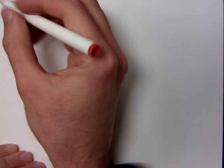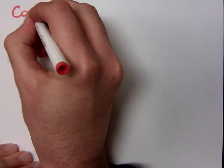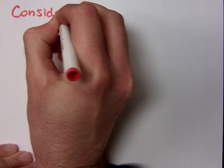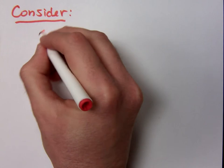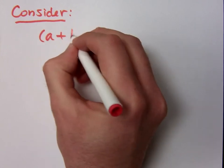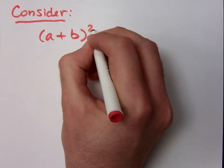I want you to consider the following, because we're going to look at some very special products. These are some super special guys I want us to consider. Consider this product right here: a plus b quantity squared.